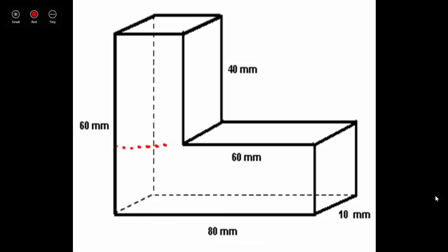Now let's look at our width clues. We only have one clue telling us the width, and it's 10 millimeters right here. This tells us that all of our other widths are equal — 10 millimeters — because the whole irregular figure is all the same width.